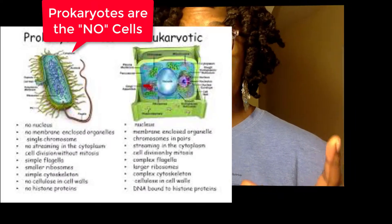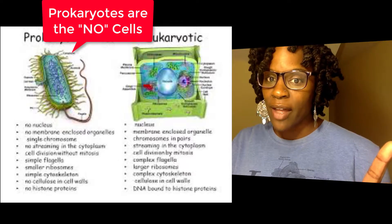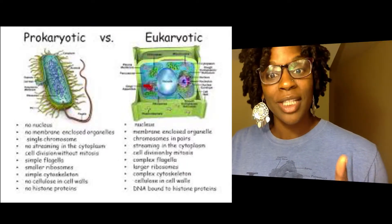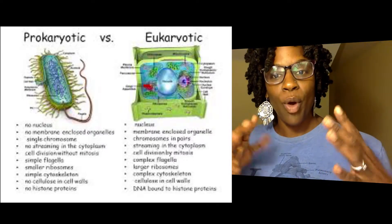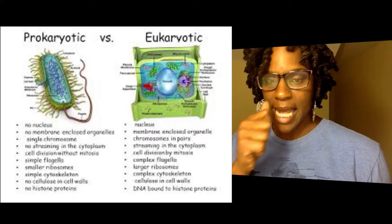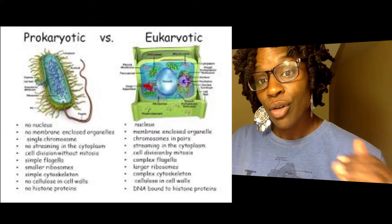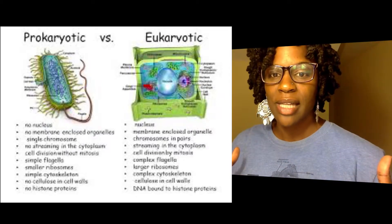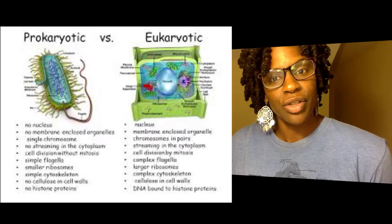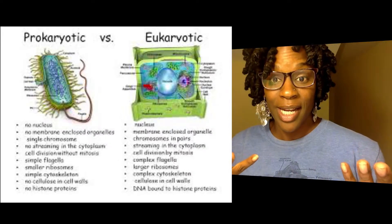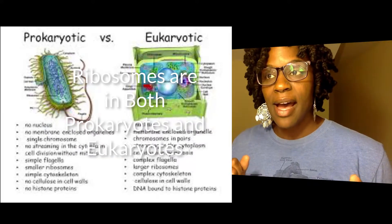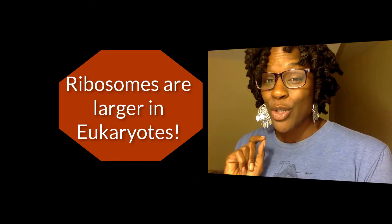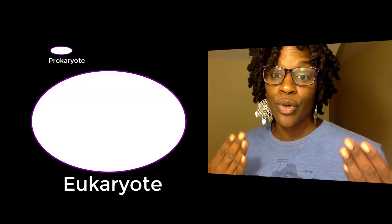As a review: prokaryotic cells — I call them the 'no cells' — have no membrane-bound organelles and no nucleus; they're just one big cell with some naked DNA. Eukaryotes are more complex cells; all your animals and plants are eukaryotic, meaning they have membrane-bound organelles. Ribosomes exist in both, but are larger in eukaryotes, and the eukaryotic cell itself is larger than the prokaryotic cell.